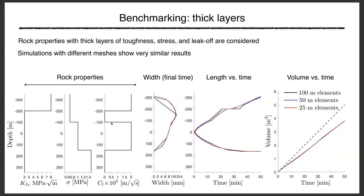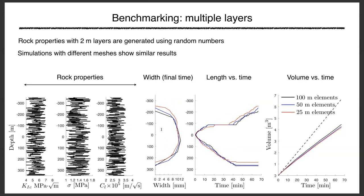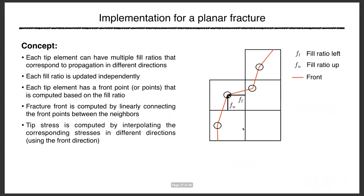For a fully random stress, toughness, and leak-off profile — generated from random numbers — with many layers, the algorithm still captures barriers that aren't obvious by inspection. Results for different element sizes are very close in terms of barriers and overall behavior, even with 2-meter layers simulated using 100-meter elements — 50 layers per element.